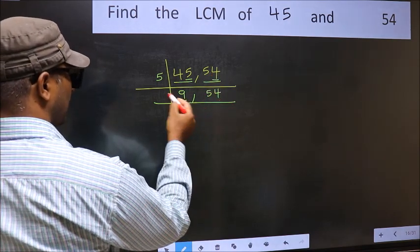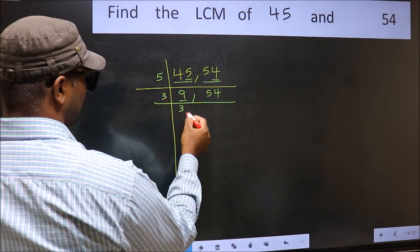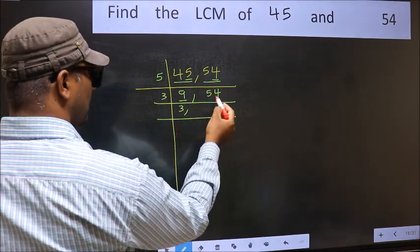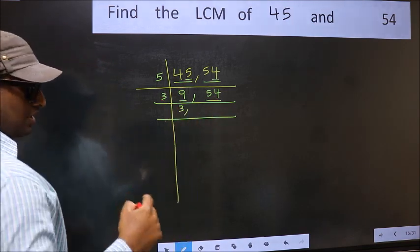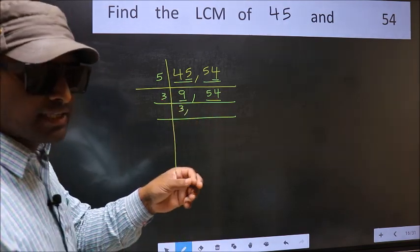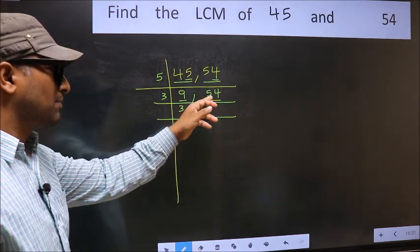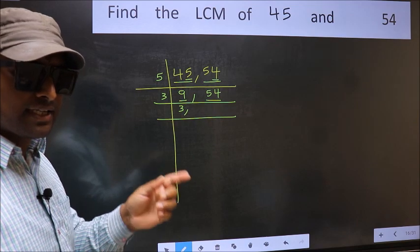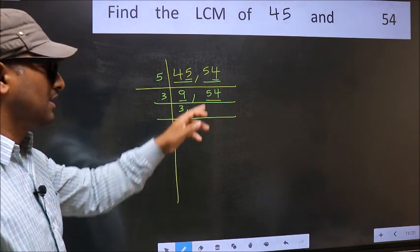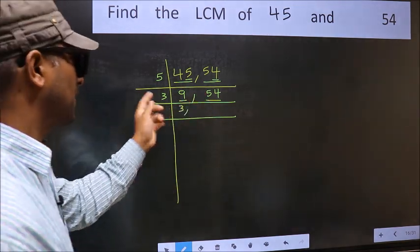Now, here we have 9. 9 is 3, 3 is 9. The other number, 54. To check whether 54 is divisible by 3 or not, add the digits. 5 plus 4, we get 9 and 9 is divisible by 3. So this number is also divisible by 3.